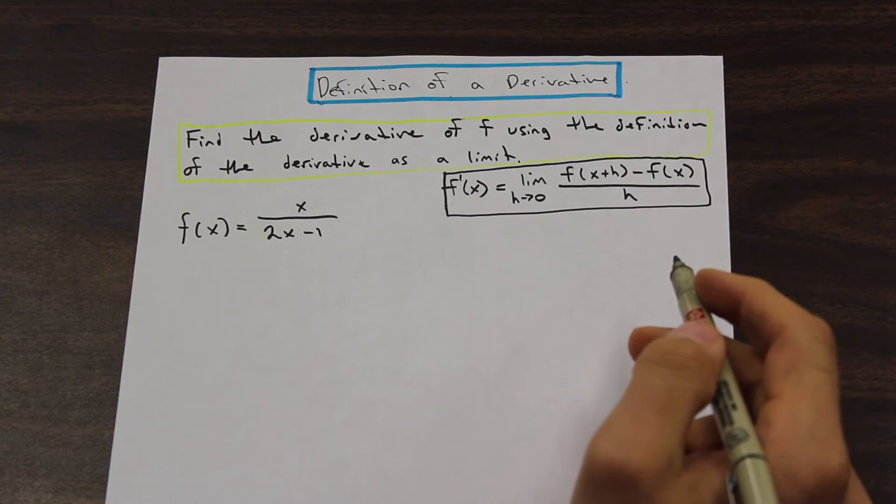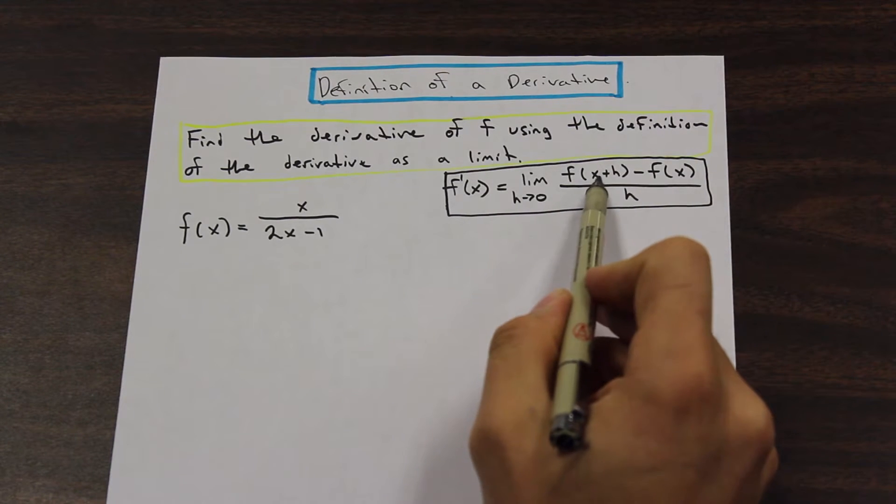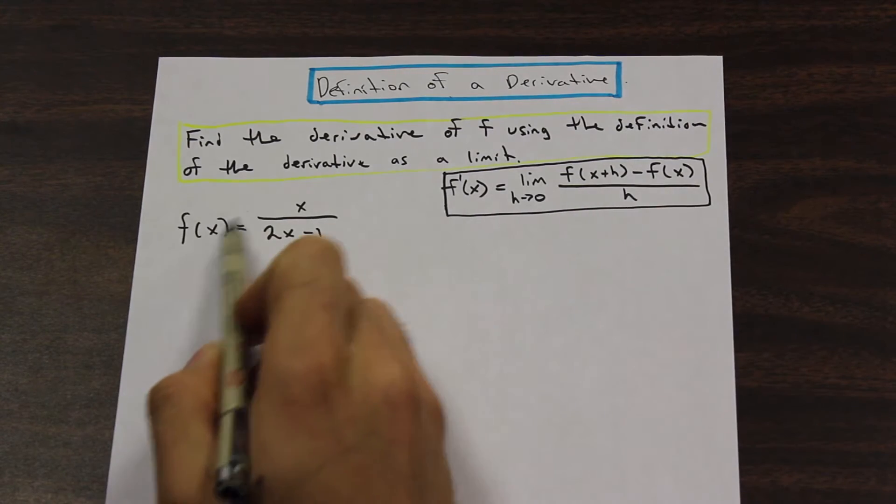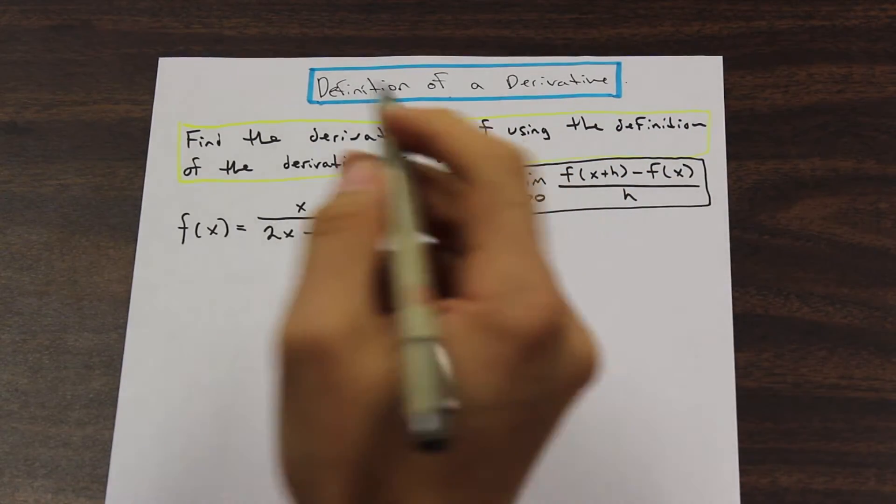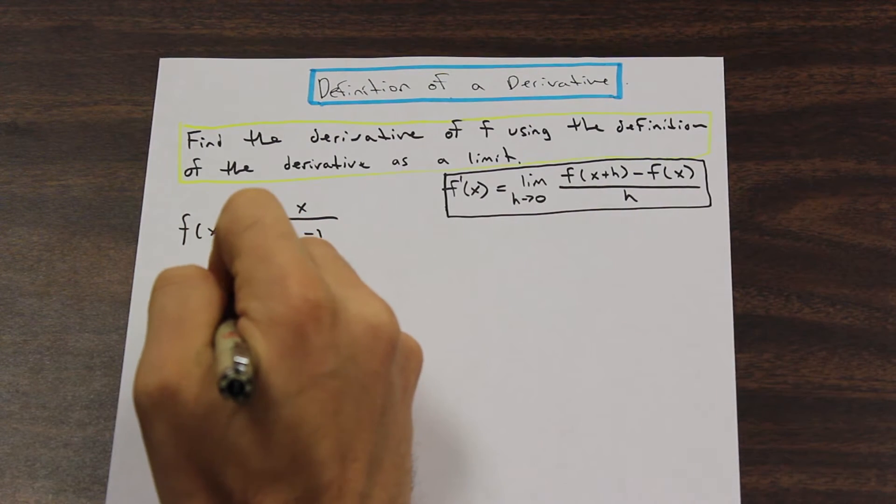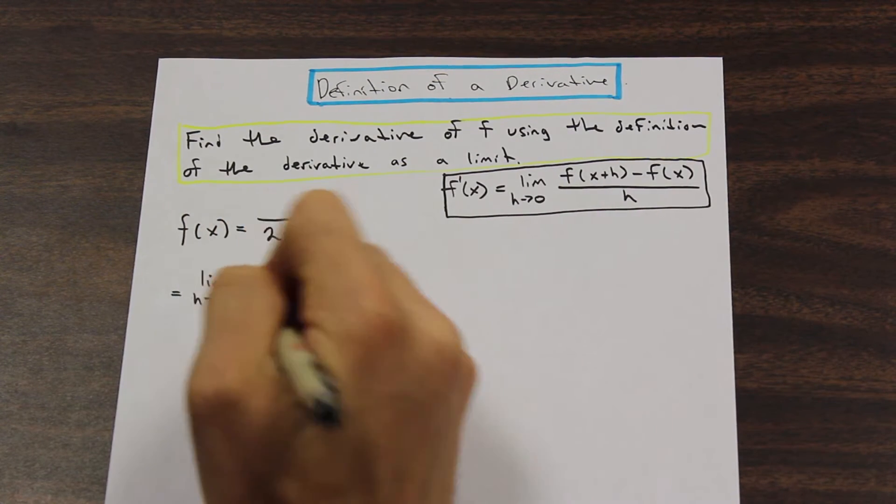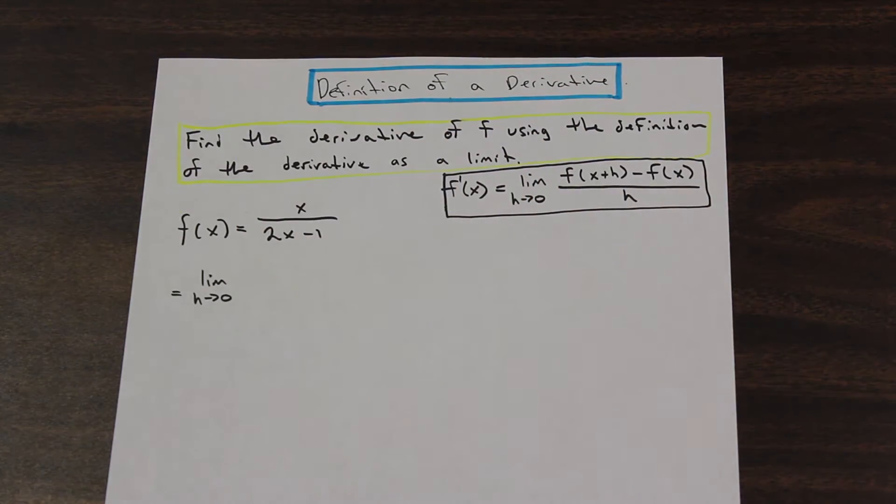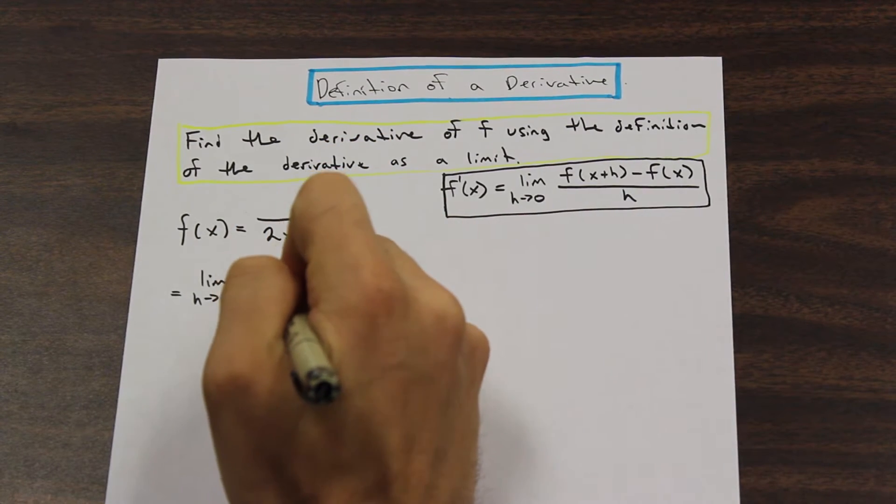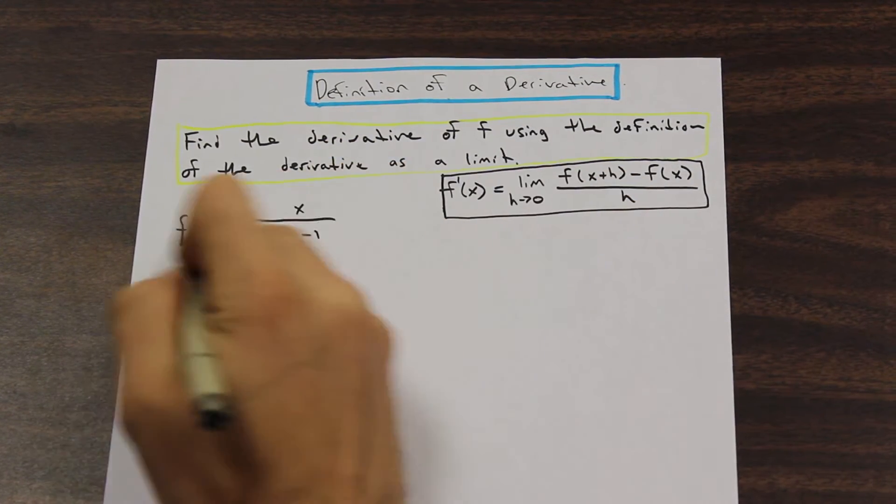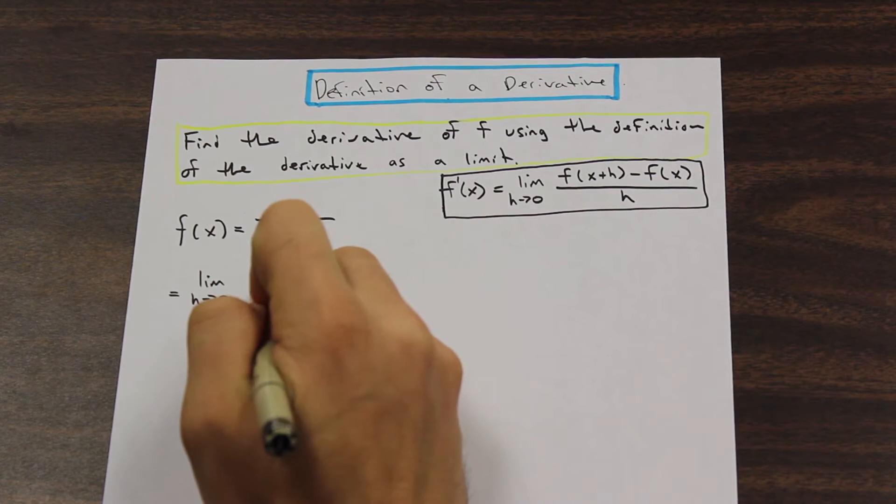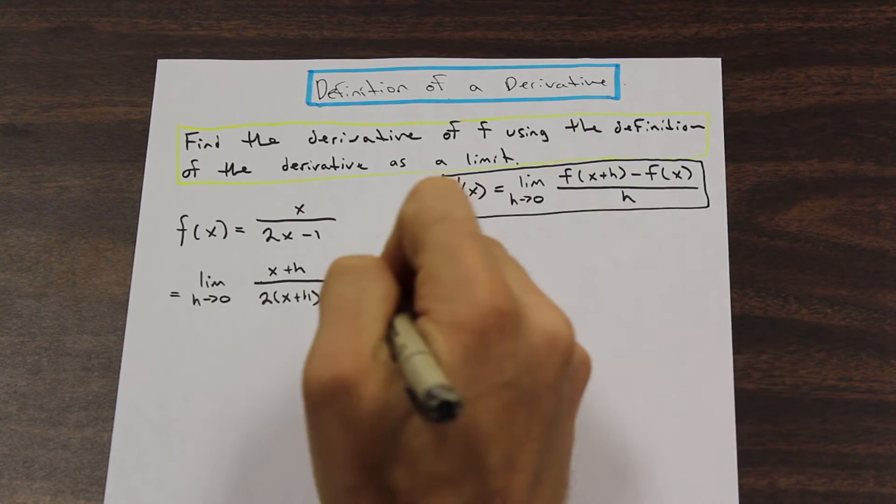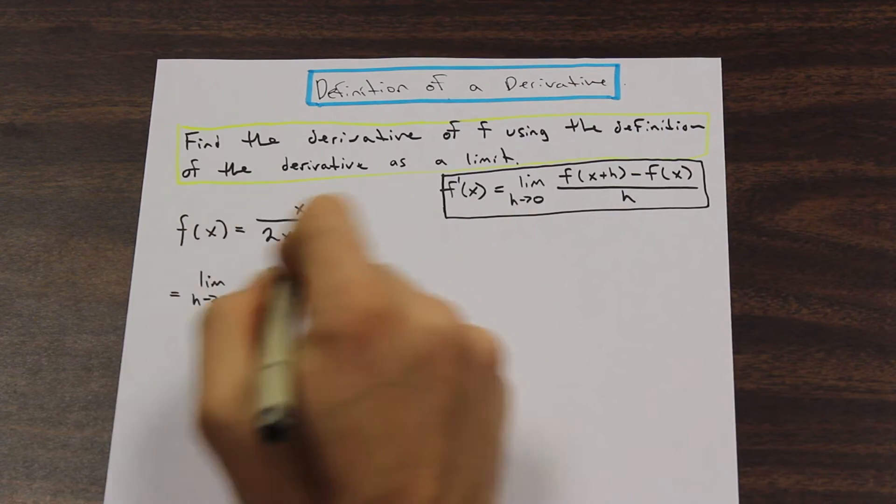So right off the bat, what we're going to do is take x plus h for this term here for f, and substitute it for x. So we're going to start by doing that. And for each step along the way, we're going to write the limit as h approaches 0. Don't forget that because that could lead to you getting this question wrong. So we have x plus h on the top, substituting x plus h for x in f(x). And we have 2(x+h) minus 1. That's the first term down for the function.